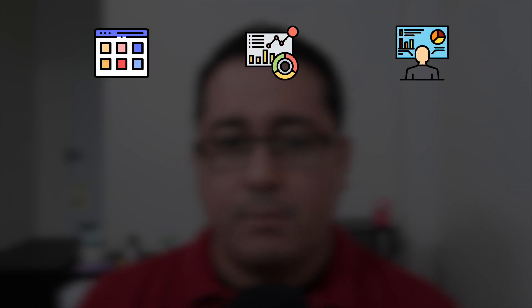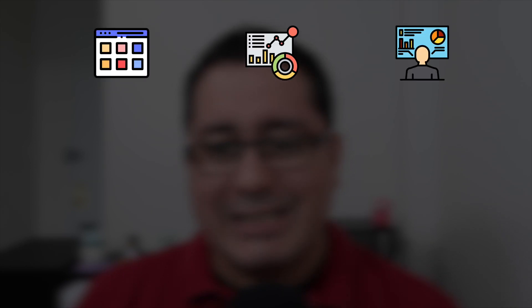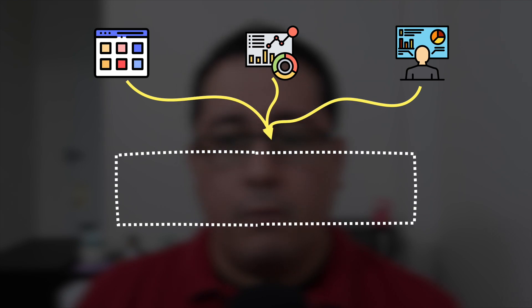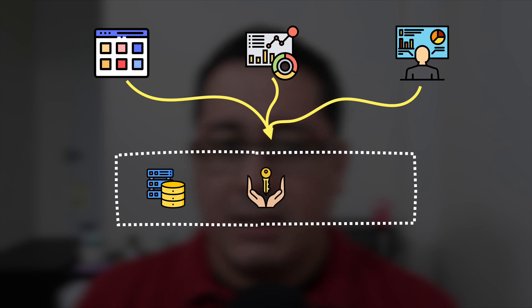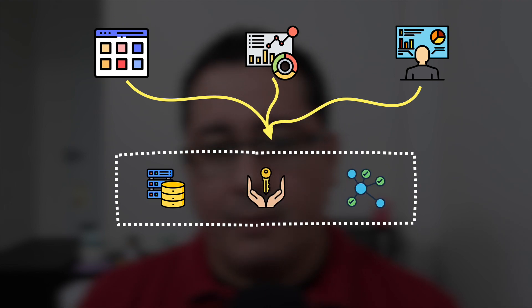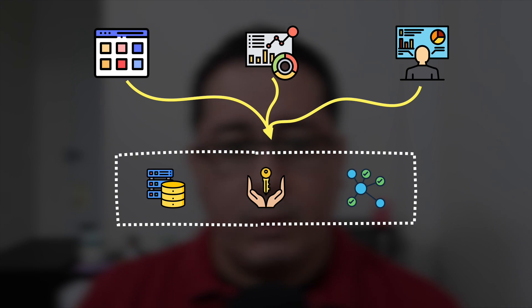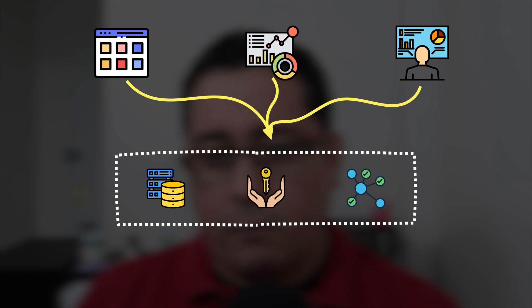When we're talking about the shared database pattern, we're talking about using one single data store for all three services. This data store could be a relational database, a key-value store, a graph one — literally anything we think makes the most sense. This means all three services will interact in one way or another with the same data store for reads and writes.